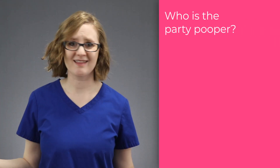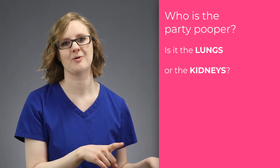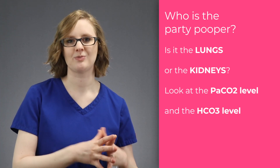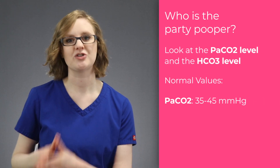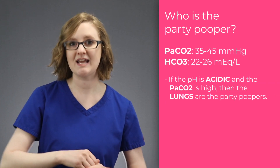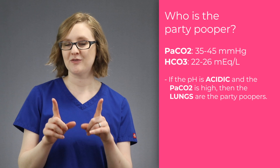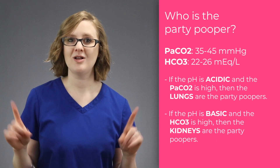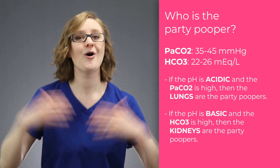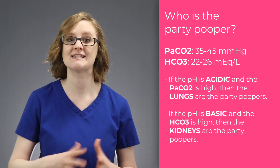Once you know where the party is located, ask yourself the second question: who is the party pooper — who is making this party no fun at all? There are two choices: either the lungs or the kidneys are the party poopers. Look at the PaCO2 level, which represents the lungs, and the HCO3 level, which represents the kidneys. Normal PaCO2 is 35–45 mmHg and normal HCO3 is 22–26 mEq/L. If the pH is acidic and PaCO2 is higher than normal, the lungs are the party poopers. If the pH is basic and HCO3 is higher than normal, the kidneys are the party poopers.